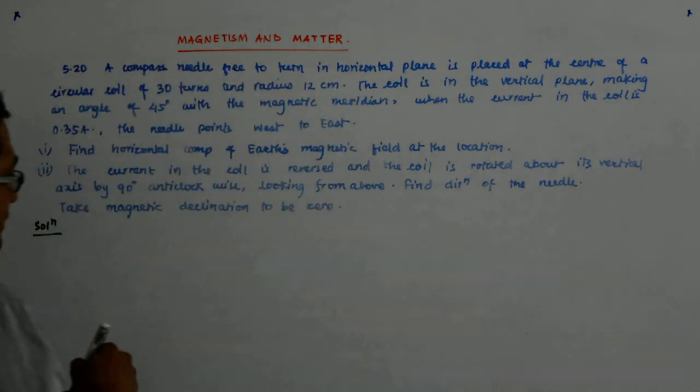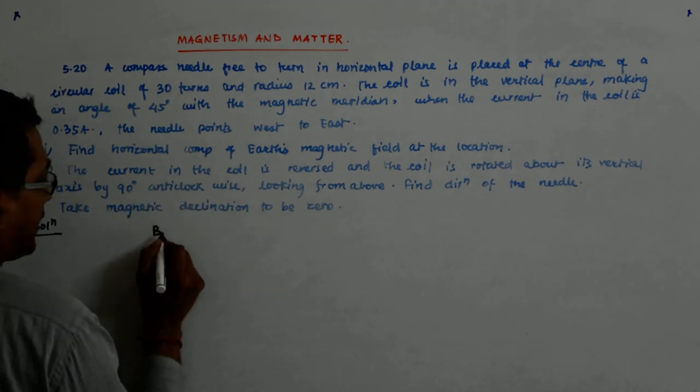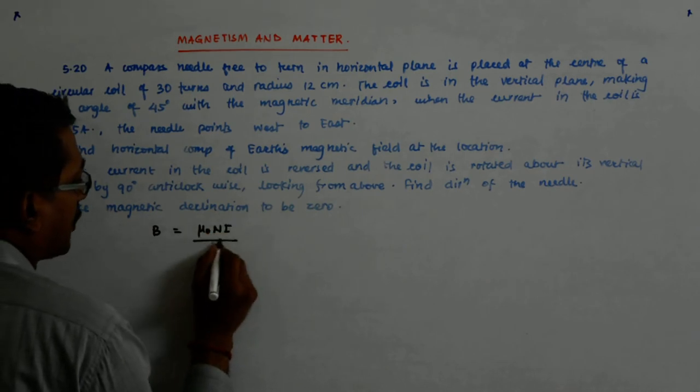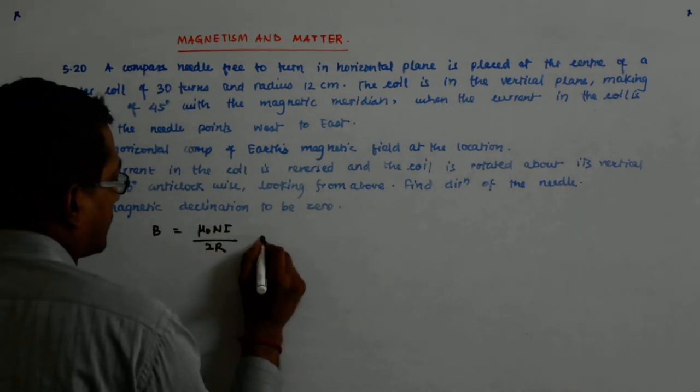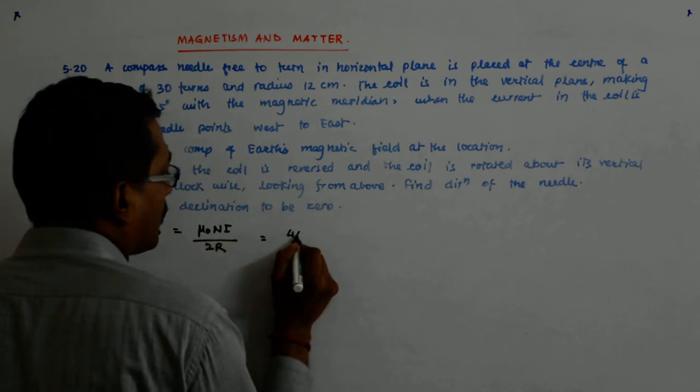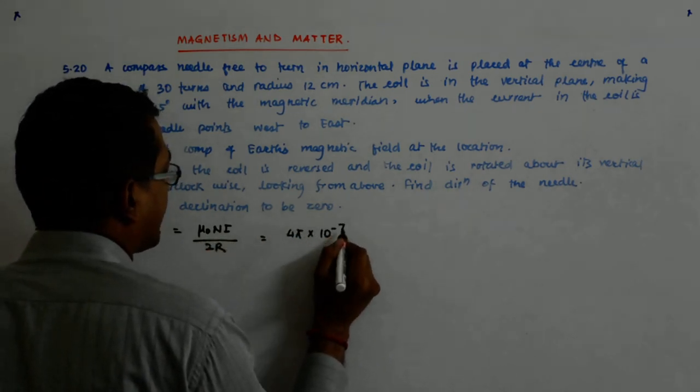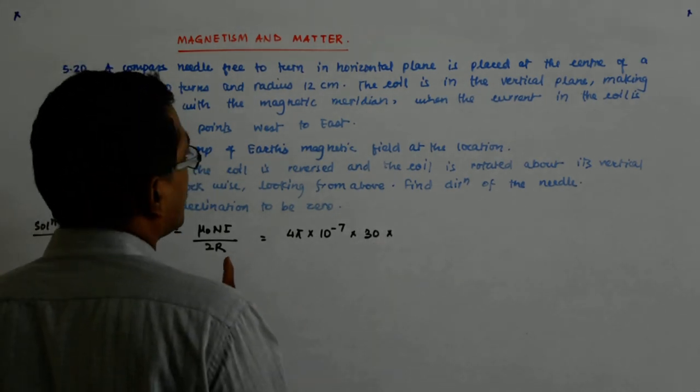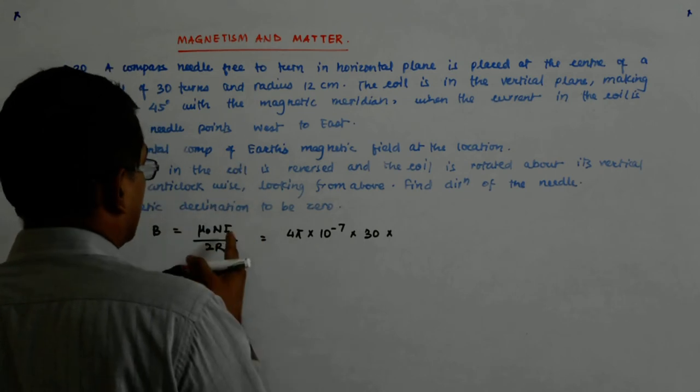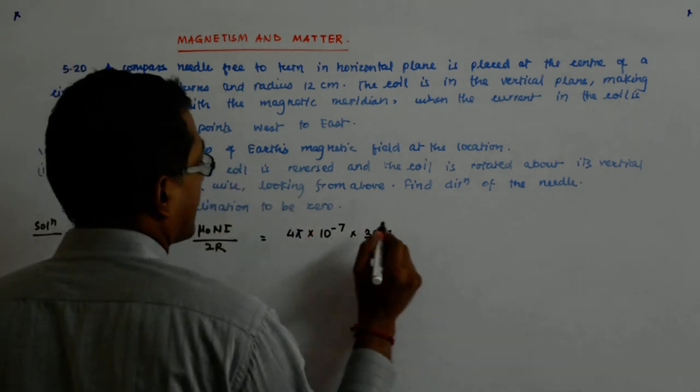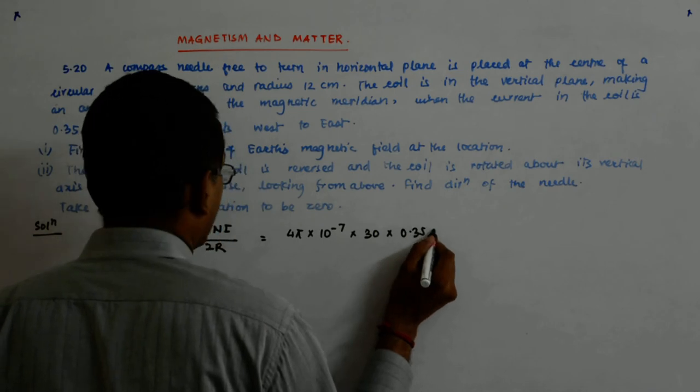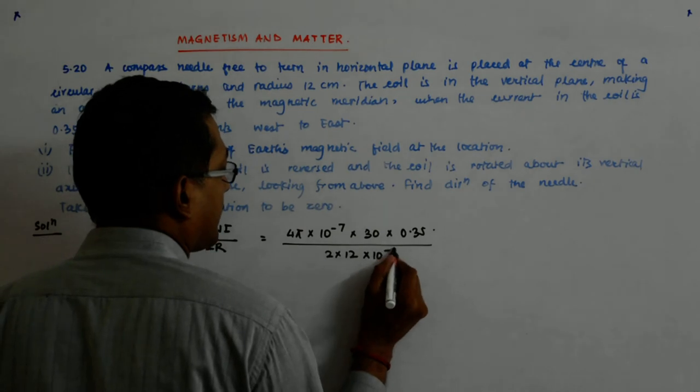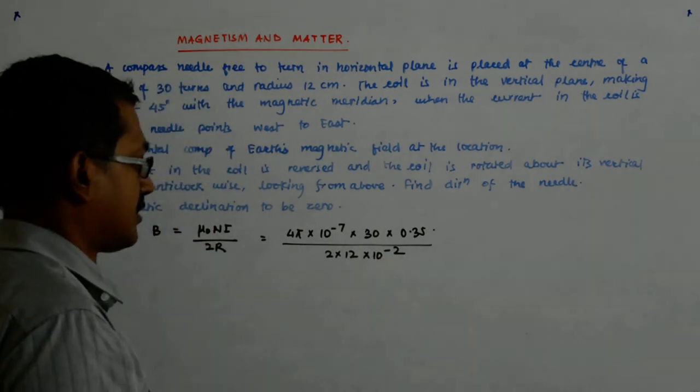So what is the field first of all? So B is equal to mu naught ni upon 2r. So that is equal to 4 pi into 10 to the power minus 7 into 30 into, what is the current? 0.35 upon 2 into 12 into 10 to the power minus 2 because it is 12 centimeters.